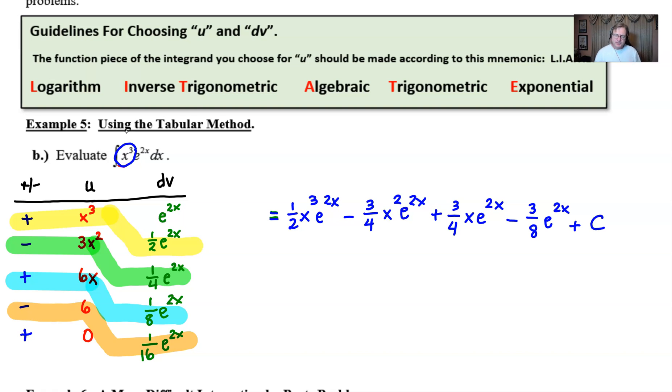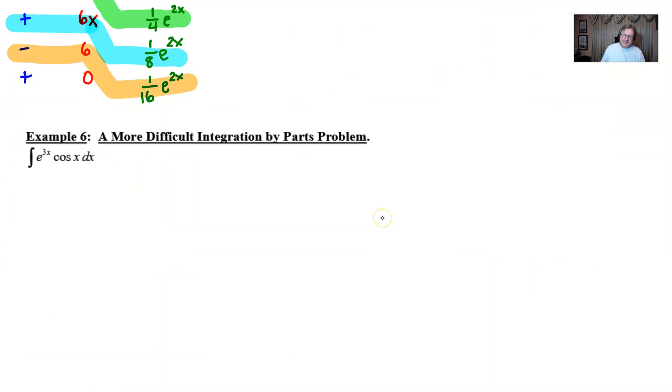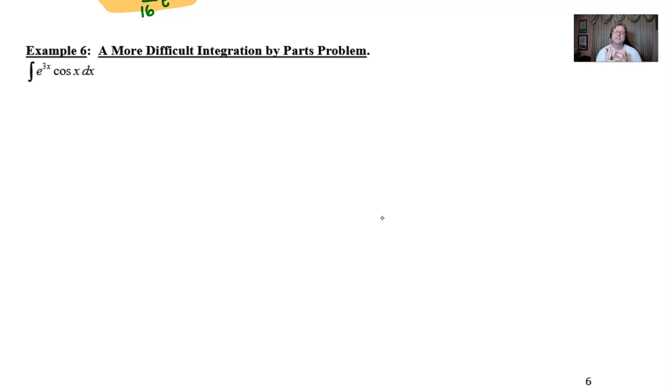Now I have a question. It's a preview of our next example. Example six, a more difficult integration by parts problem. Notice neither part contains the algebraic piece. So how are we going to tackle this?